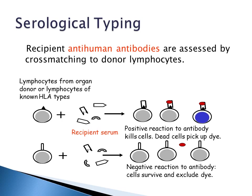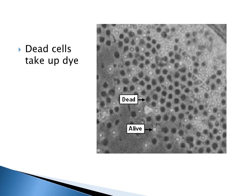Recipient anti-human antibodies are assessed by cross matching to donor lymphocytes. You have lymphocytes from the organ donor or lymphocytes of known HLA types and you mix those with the recipient serum. A positive reaction to antibody is going to kill the cells and the dead cells are going to pick up the dye and stain. A negative reaction will not kill the cells and live cells exclude the dye so live cells won't be stained.